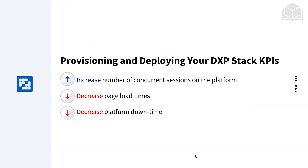Now we have some KPIs. For example: increase the number of concurrent sessions on the platform, decrease page load times, and also decrease platform downtime.